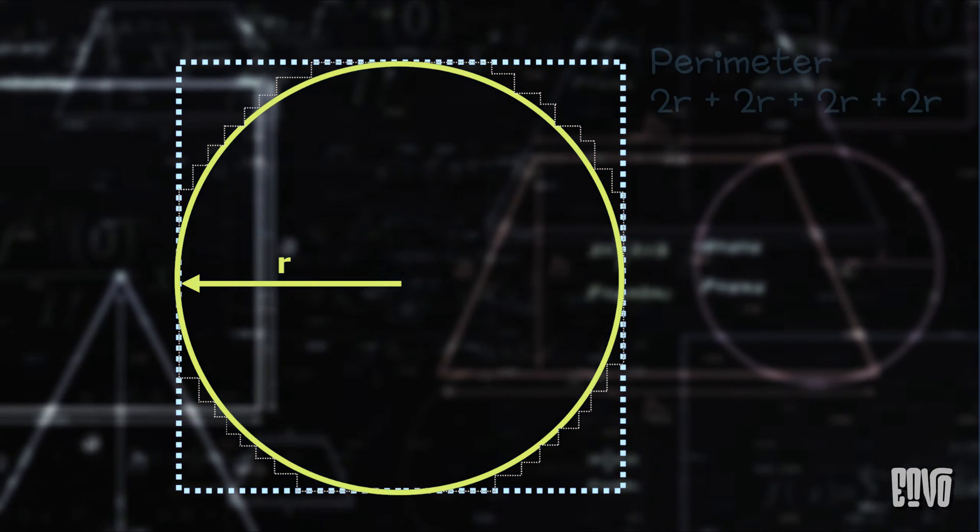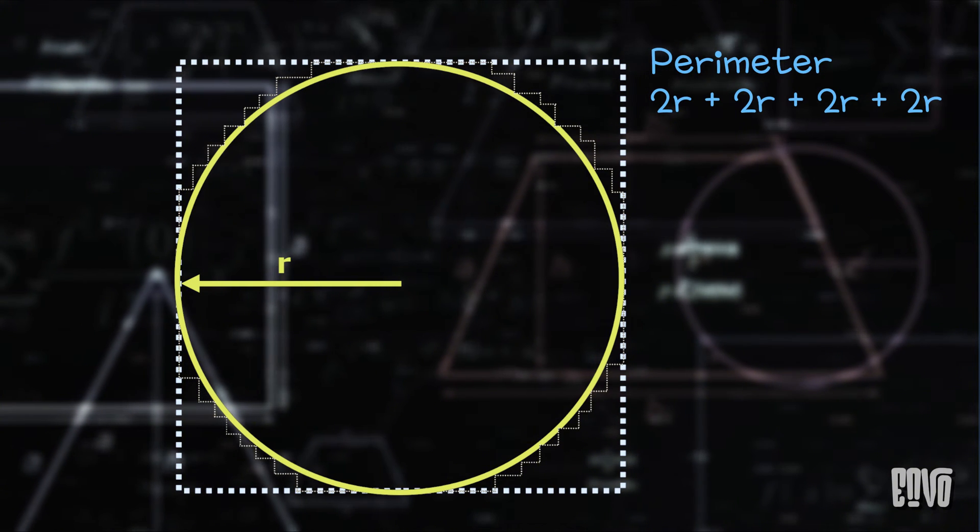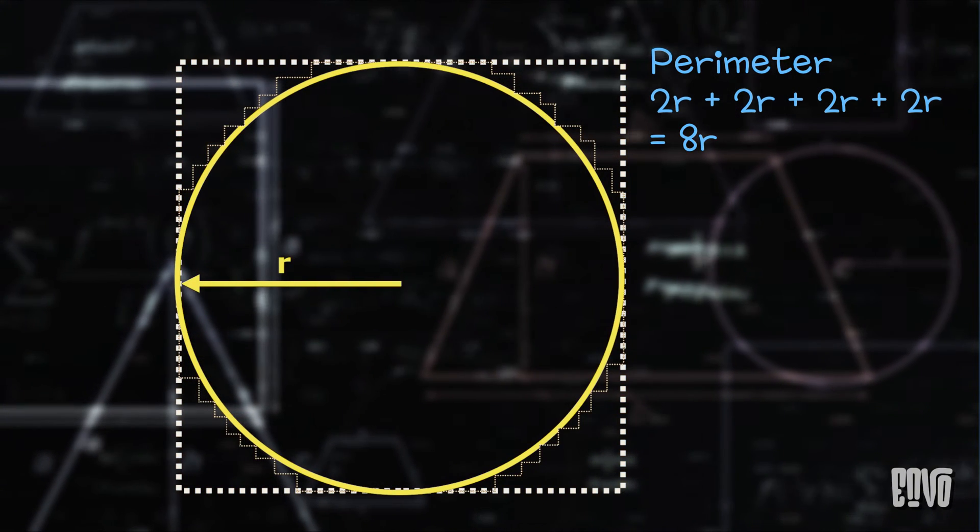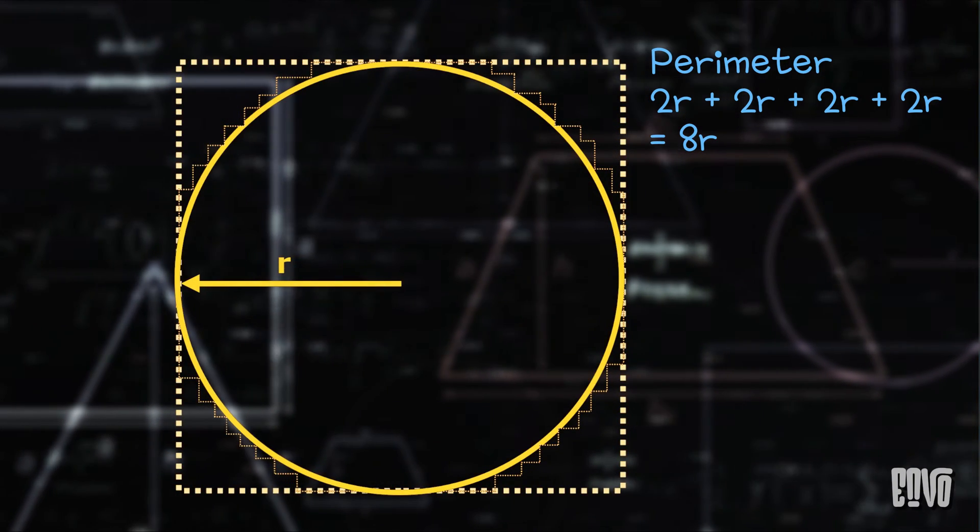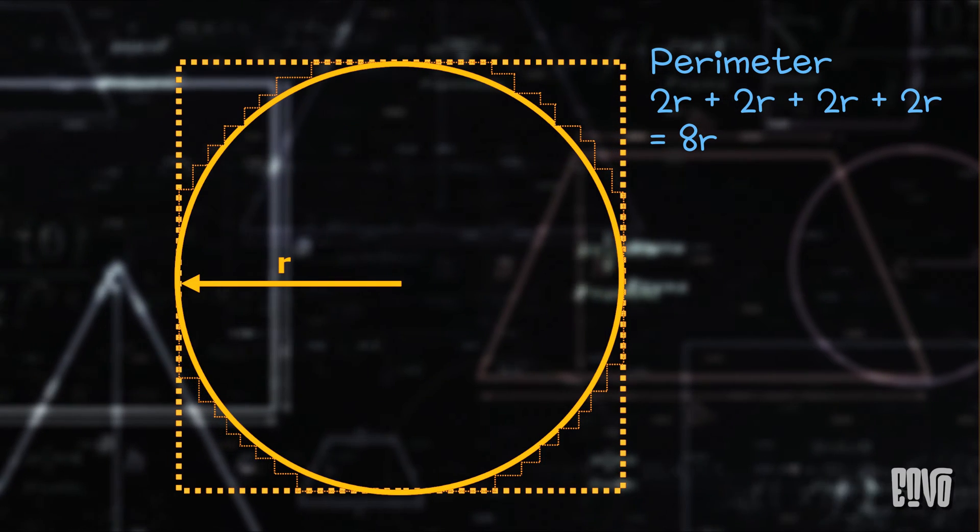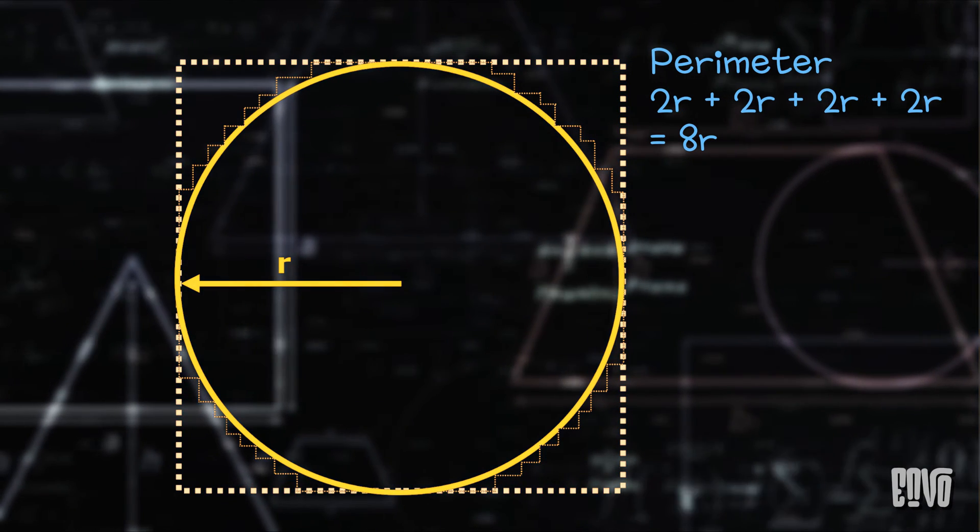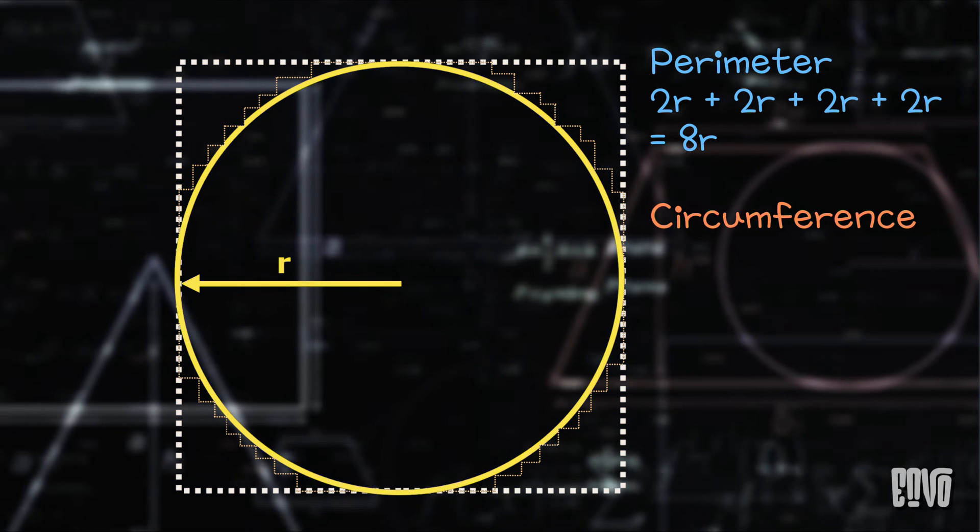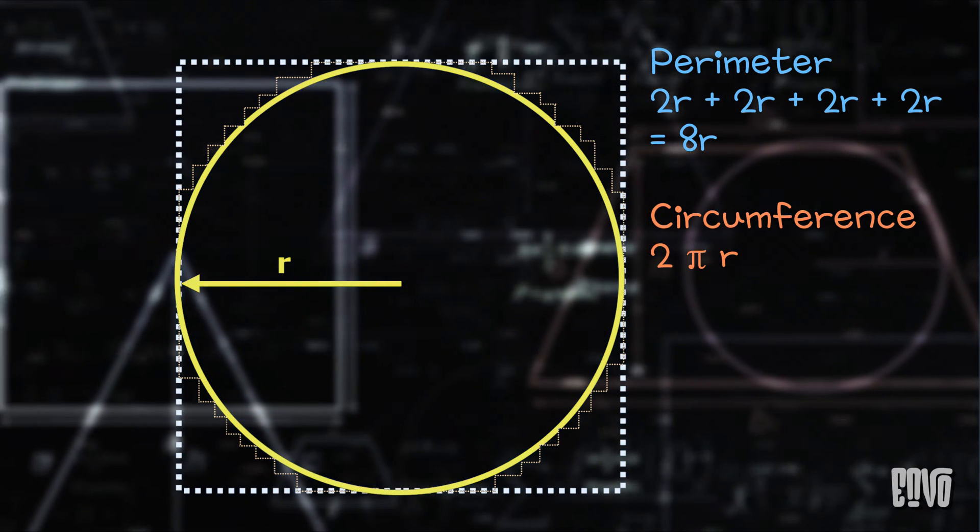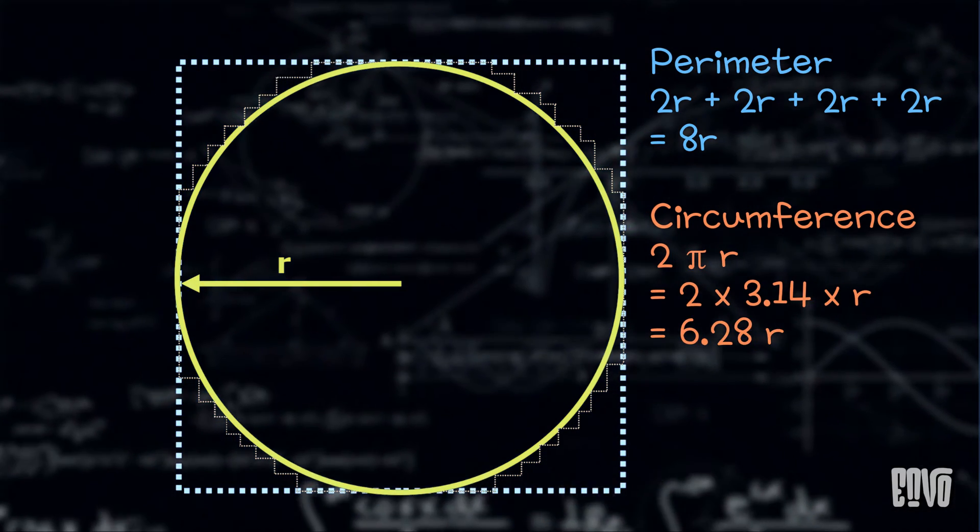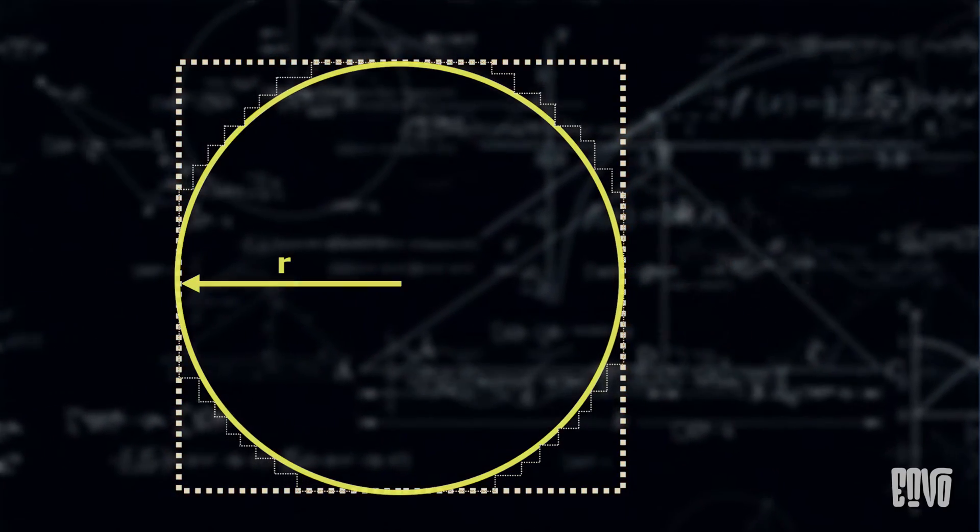Instead, it might converge to the perimeter of the bounding square, 4 times 2r equals 8r, or some other value, depending on how you construct this staircase. This is because the tiny horizontal and vertical segments don't lie on the curve of the circle, and their inclines don't converge to the slope of the curve.